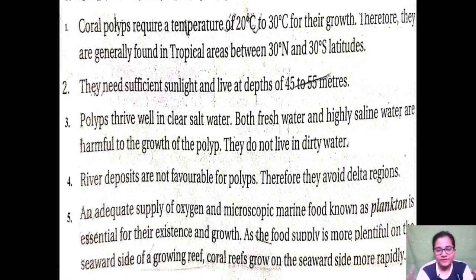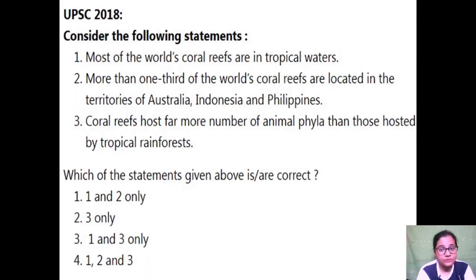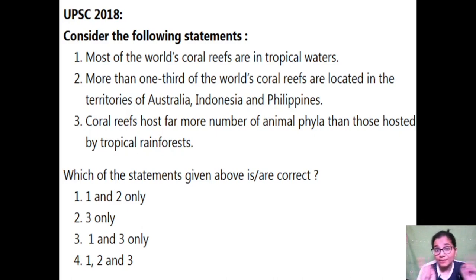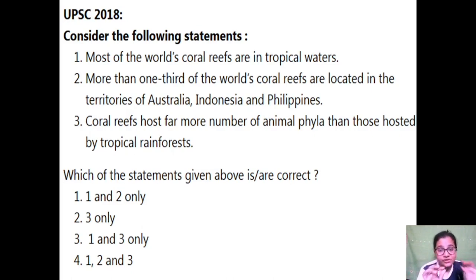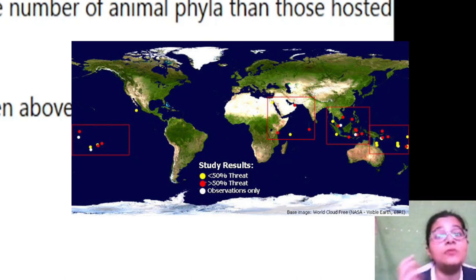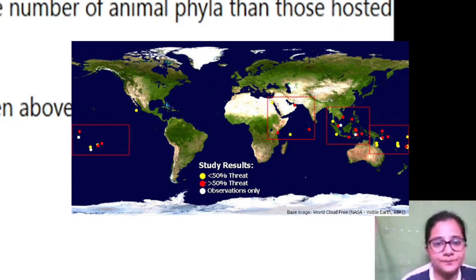These are the conditions we have discussed. Here is a useful UPSC question from 2018: Consider the following statements. First: most of the world's coral reefs are found in tropical water — correct, because corals need an optimum temperature of 20-30°C found in tropical regions. Second: more than one third of the world's coral reefs are located in the Australian-Indonesian-Philippines region — correct, because Australia, Indonesia, and the Philippines lie in tropical water.